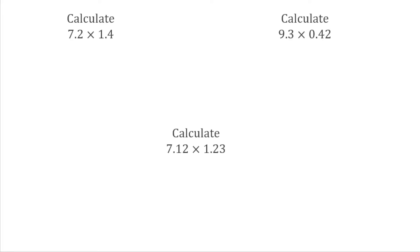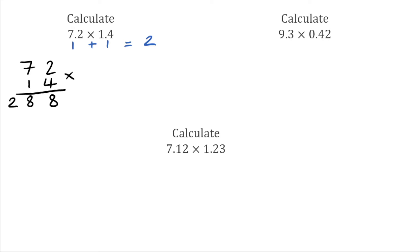For this first question we've got 7.2 multiplied by 1.4. We've got one decimal place in the first number and one decimal place in the second number, which means our answer is going to be to two decimal places. We remove the decimals and treat this as 72 multiplied by 14 using the column method. So we've got 4 times 2 which is 8, then 4 times 7 which is 28. Moving over to the 1, we've got a placeholder, then 1 times 2 which is 2, and 1 times 7 which is 7.